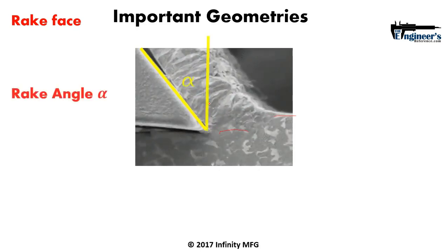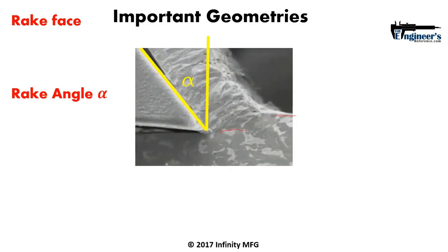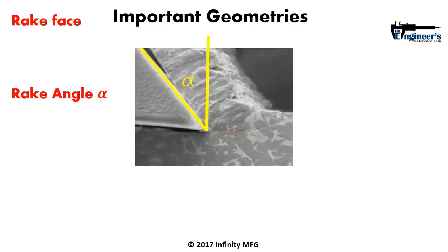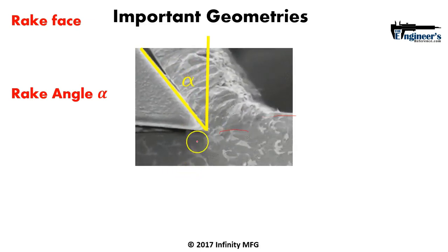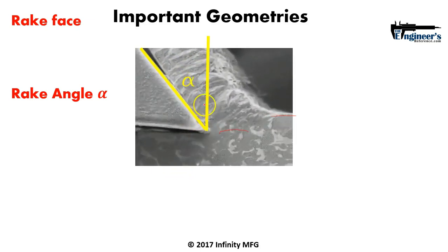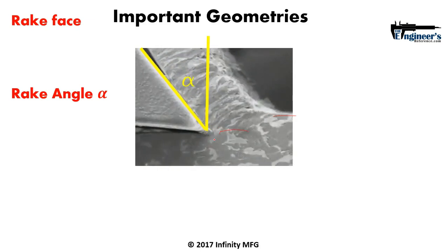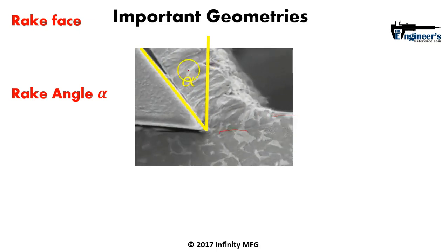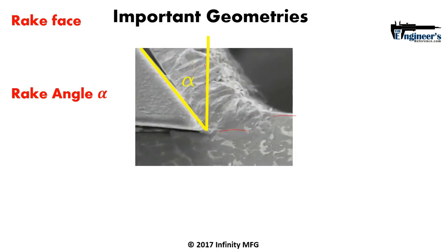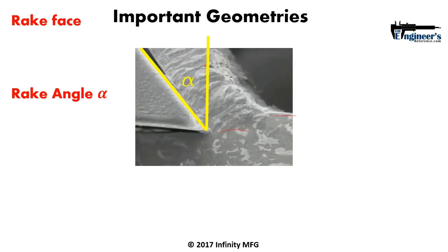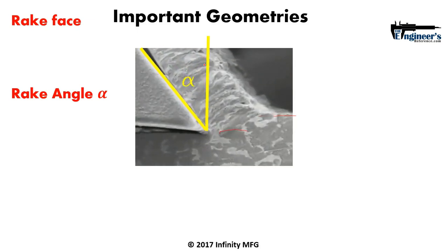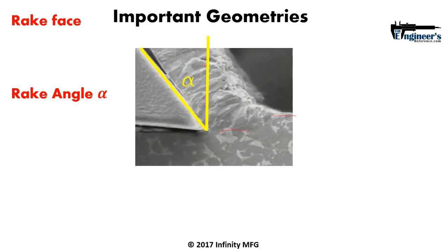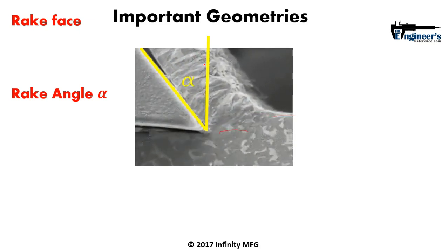Next is the rake face angle, which is at least partially tied to how ductile the material is. Starting from the plane normal to the workpiece, the rake face goes over from this point, creating the rake angle. Depending on what rake angle you select, it can be beneficial or detrimental to the kind of material you're cutting, so this is a very important feature to keep in mind.